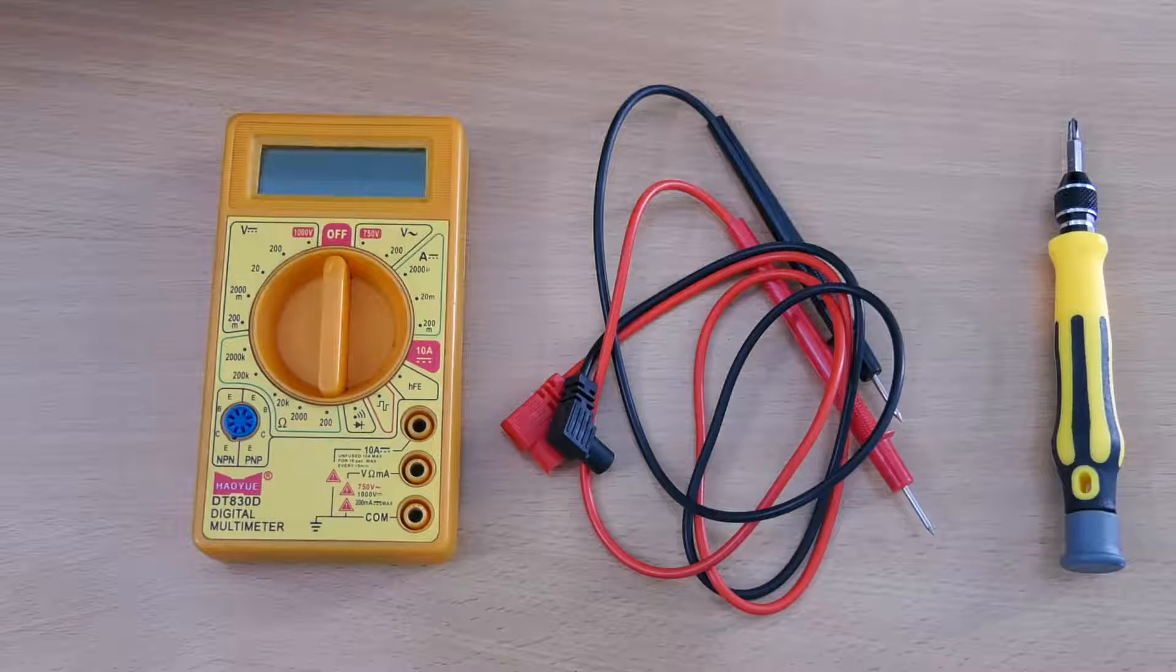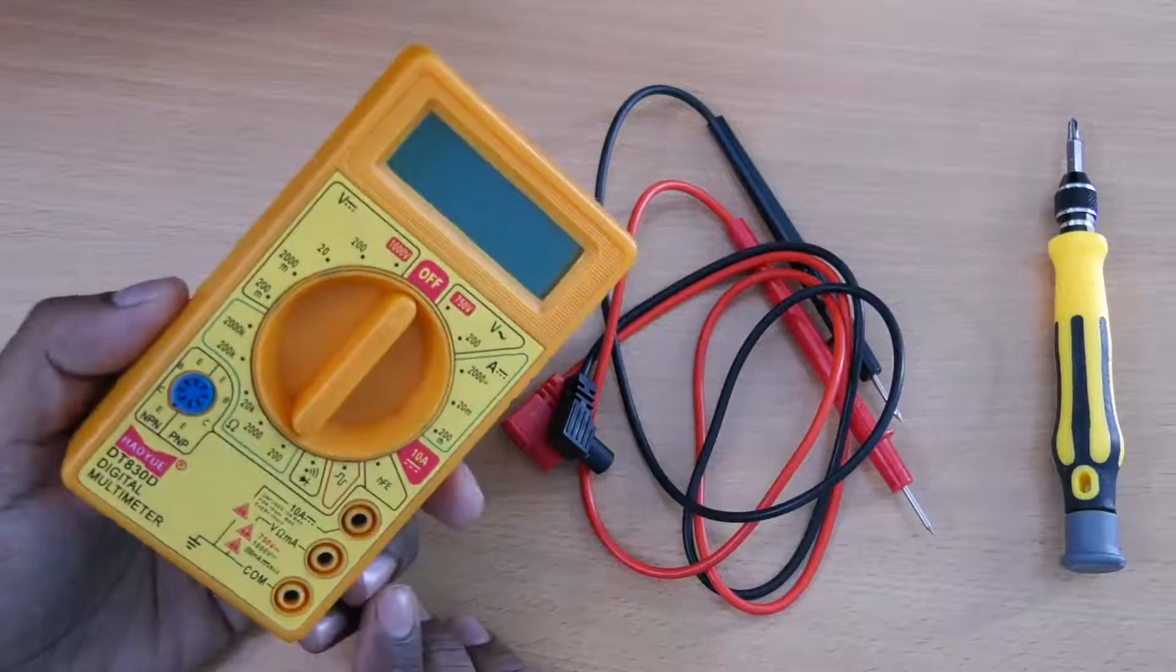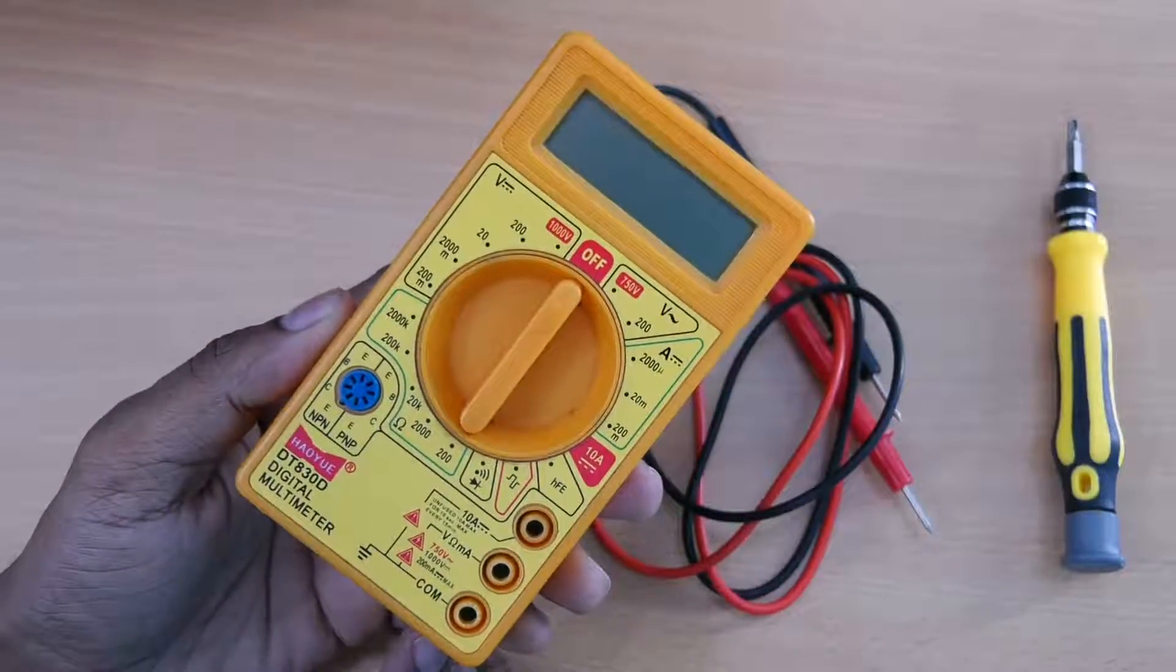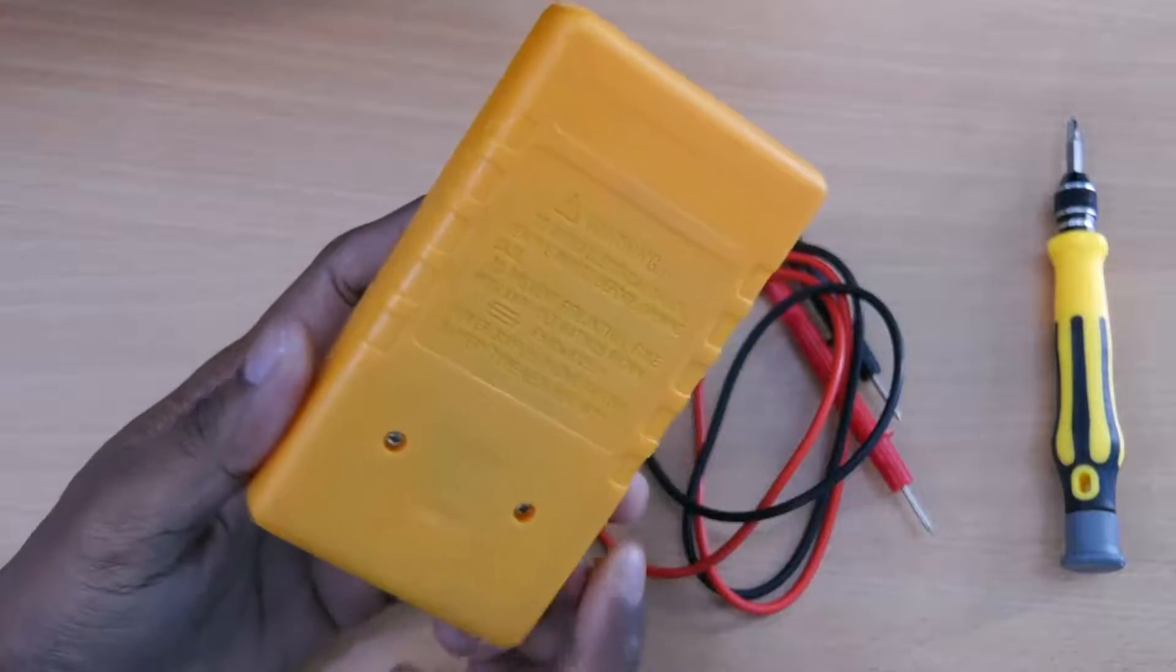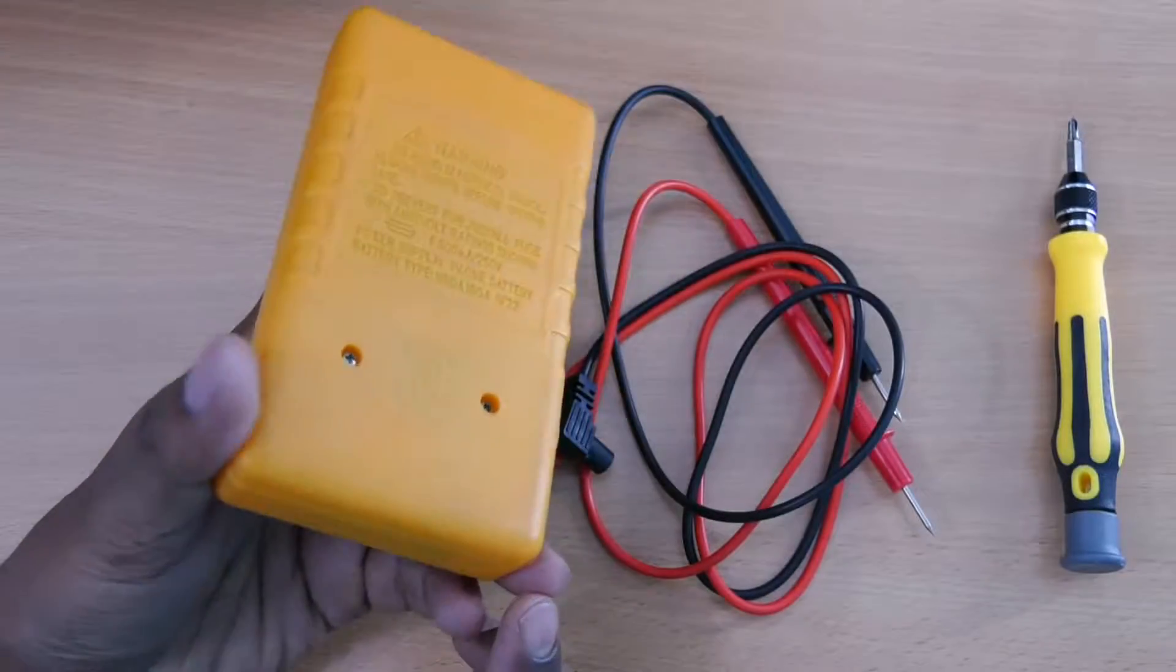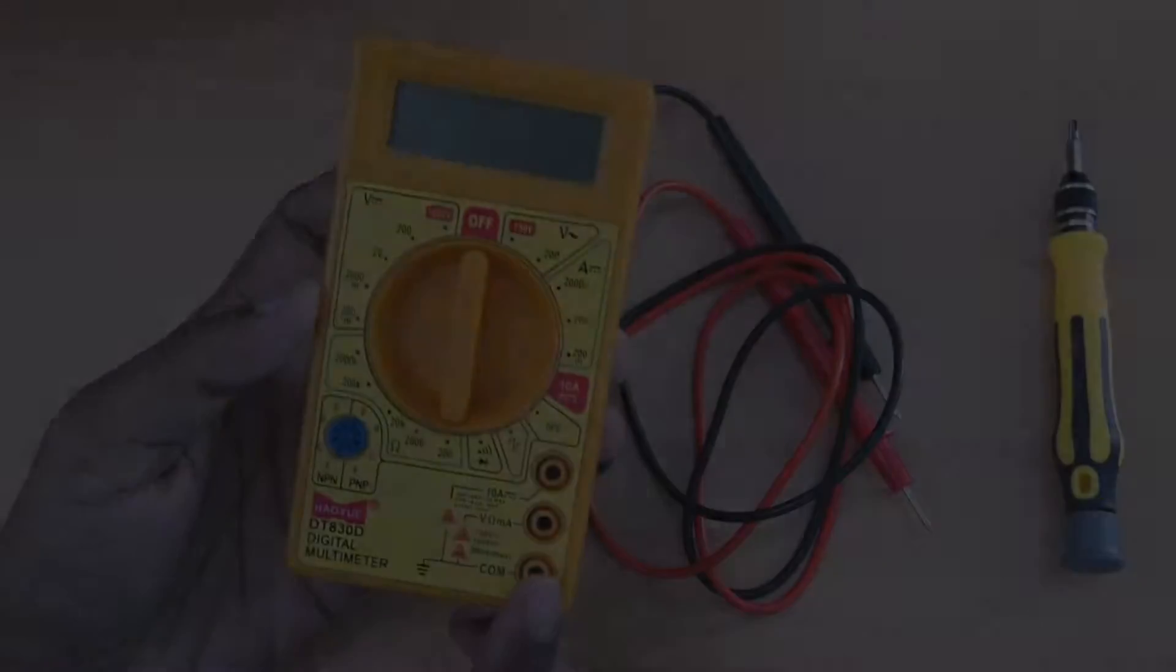This is one of the cheapest multimeters you can get in the market, but because they are cheap they have less features. But you can modify them to make them more safe and handy. This multimeter doesn't have a fuse in it.